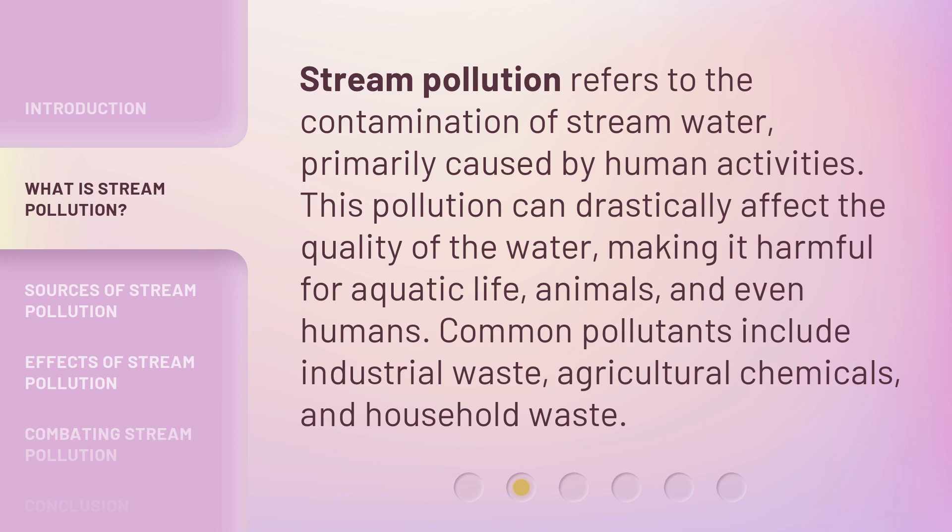Stream pollution refers to the contamination of stream water, primarily caused by human activities. This pollution can drastically affect the quality of the water, making it harmful for aquatic life, animals, and even humans. Common pollutants include industrial waste, agricultural chemicals, and household waste.